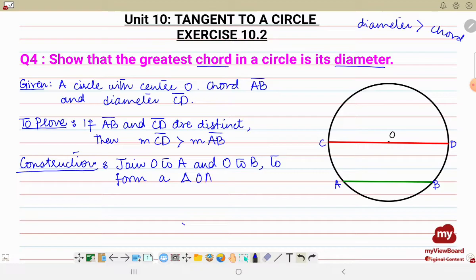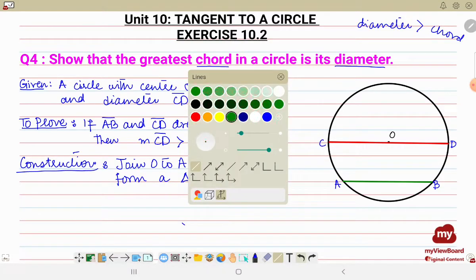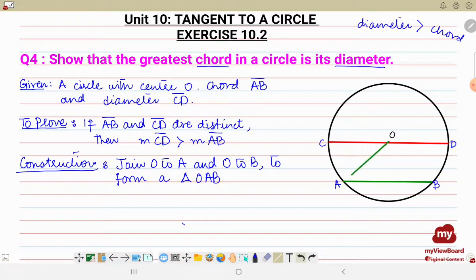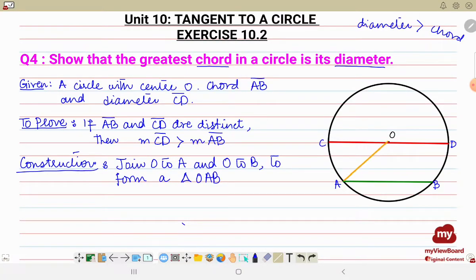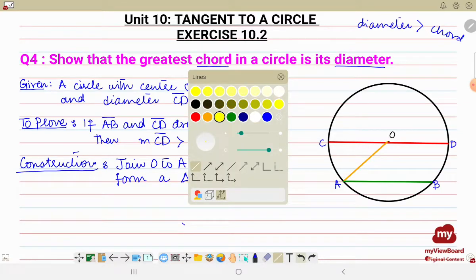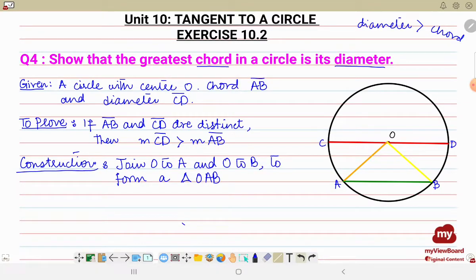So let me draw the two construction lines. So let it be with other different color, let's say OA with this and OB with this one. So you see OAB is a triangle. Now let's do the proof, we'll start doing our proof by the theorem that we have studied earlier in the ninth grade.